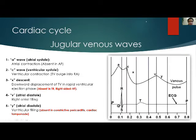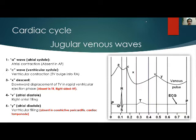Regarding jugular venous pressure and the cardiac cycle: the A wave correlates to atrial contraction and is absent in patients with atrial fibrillation. The C wave relates to ventricular contraction pushing the tricuspid valve into the right atrium. The X descent relates to downward displacement of the tricuspid valve during rapid ventricular ejection and is absent in tricuspid regurgitation and right-sided heart failure. The V wave relates to venous return and rapid atrial filling. The Y descent relates to ventricular filling and is absent in constrictive pericarditis and cardiac tamponade.